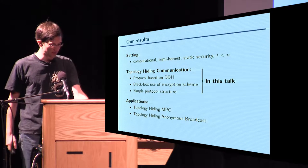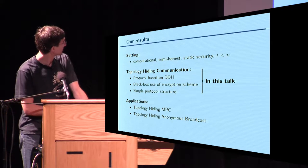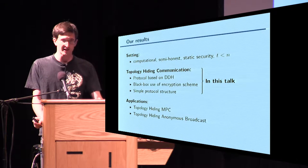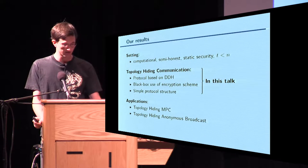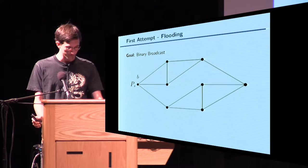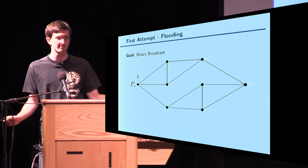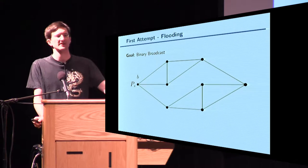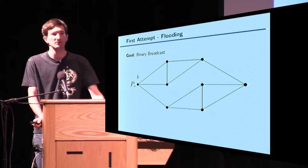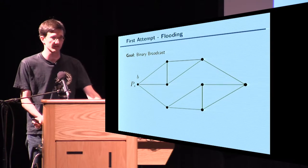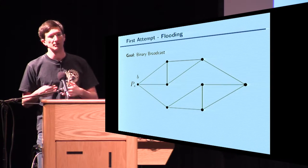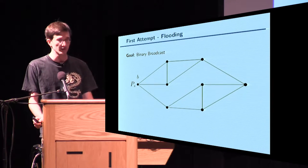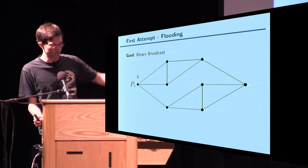I want to focus on the protocol and give you some idea of how you can achieve topology-hiding communication just using threshold encryption. First, let's start simple. As we are in the semi-honest setting, it's enough to construct binary broadcasts. Once you have binary broadcasts, you can broadcast public keys and then complete the network. So from now on, we just want to focus on binary broadcasts.